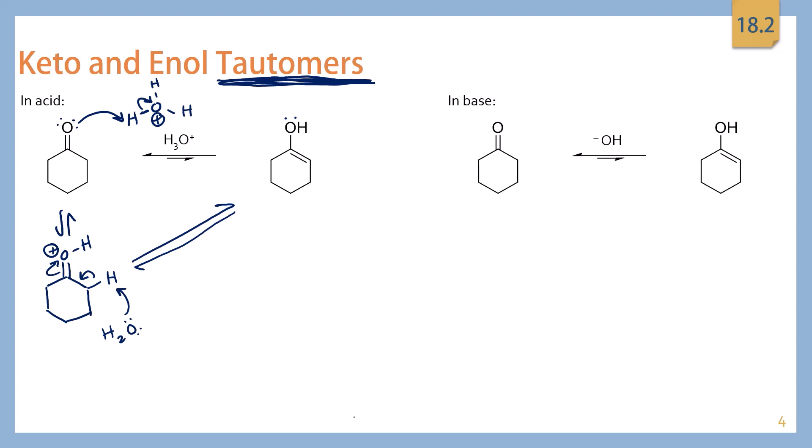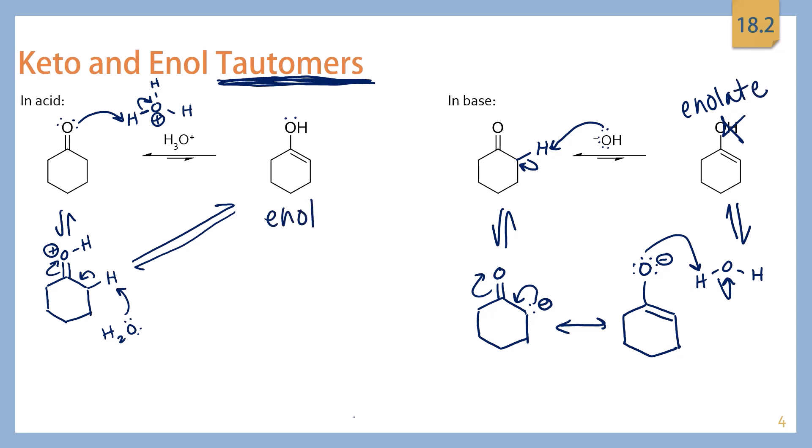I'm going to erase that so it doesn't become confusing. You can do the same thing in base. The base mechanism is basically the same. You're just not starting off with a protonation. So instead we're going to start off with a deprotonation. So we're going to take away this alpha hydrogen and that creates our enolate. And remember this has a resonance form. And if we wanted to, we could say that it picks up a hydrogen from water. Now normally in base, you're not really going to see the enol form. You're actually going to end up stopping at the enolate. The enol is typically only seen in acid. So the process of going between the keto and enol forms is tautomerization.